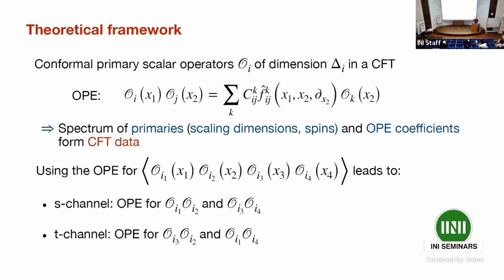In CFTs one can work with the operator product expansion. If two operators come very close together, you can express their product as an infinite series organized by the conformal primaries of the theory — with coefficients known as OPE coefficients. The collection of OPE coefficients and the spectrum (scaling dimensions and spins of conformal primaries) are known as the CFD data. Via the OPE, you can in principle compute any correlator, reducing higher-point functions to three-point functions, which are fixed up to a constant by conformal symmetry.